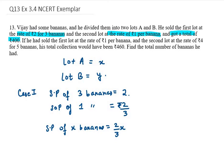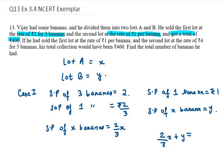Now let's talk about selling price of bananas in lot number 2. Selling price of 1 banana is ₹1. Selling price of x bananas is x, so selling price of y bananas will be y. Now for the total, we have 2/3 x plus y equals 400. This is my equation number 1.